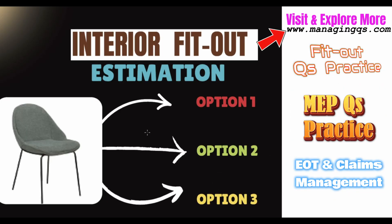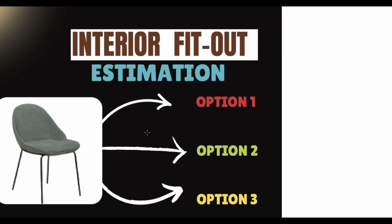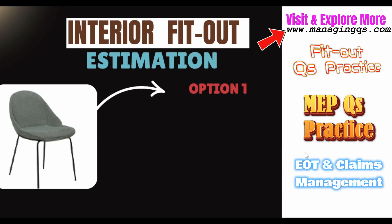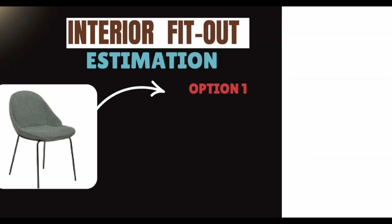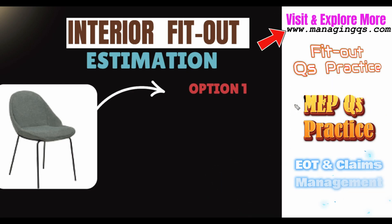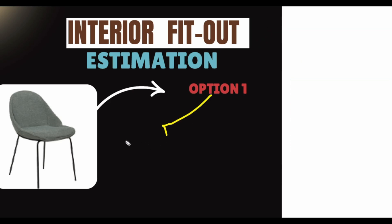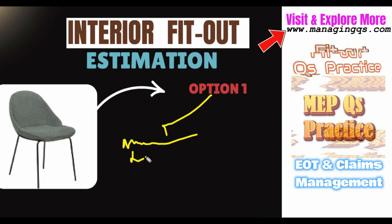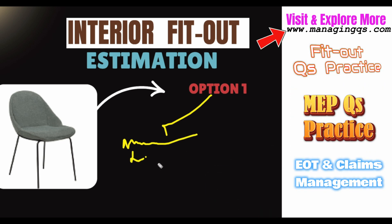We have three options to estimate these types of chairs, and we will discuss them one by one. Option number one: imagine you are the fit-out contractor and you have your own factory to build this type of chair. If you build it yourself, you need to know the total material cost of this chair and the total labor cost of this chair.